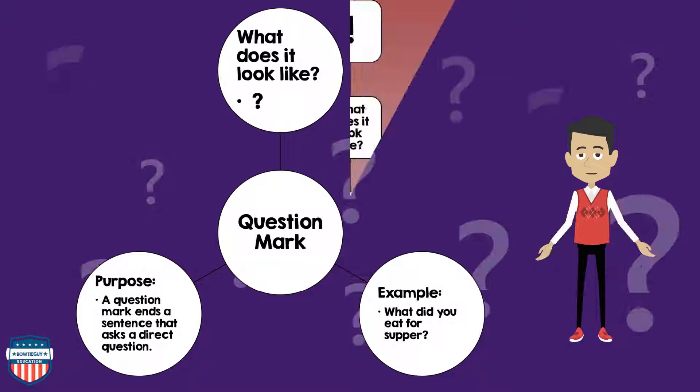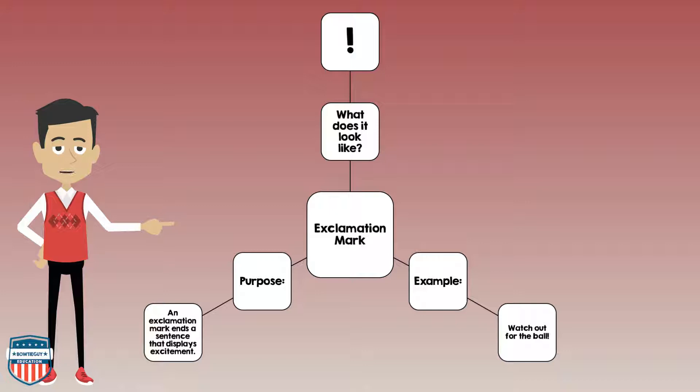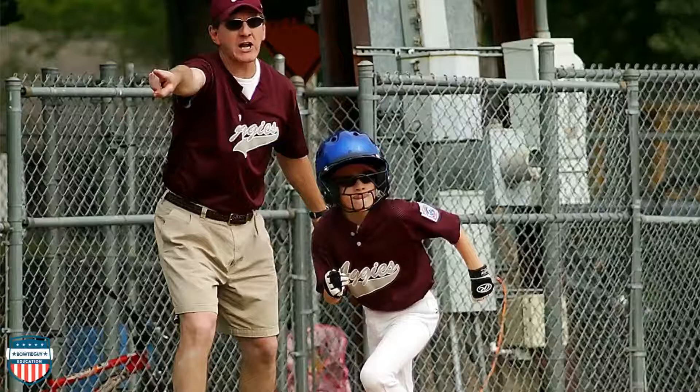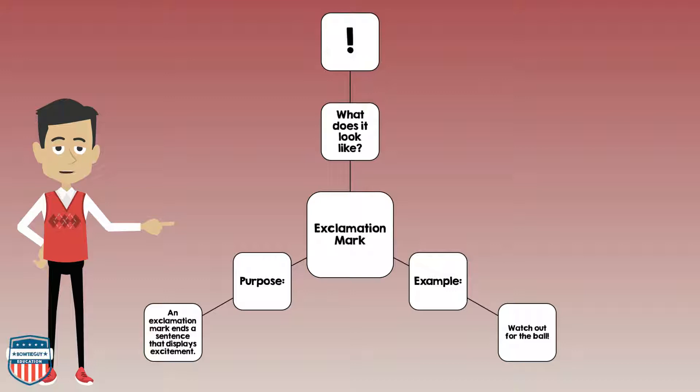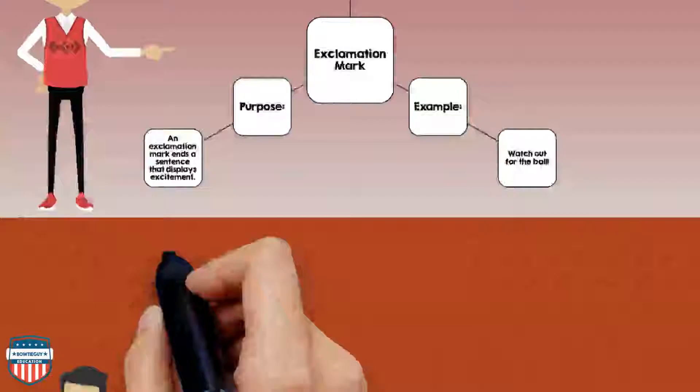Next, let's discuss the exclamation mark. An exclamation mark is a straight vertical line with a dot underneath it. An example of an exclamation mark: Watch out for the ball! The purpose of using an exclamation mark: it ends a sentence that displays excitement.